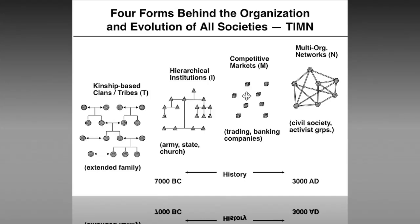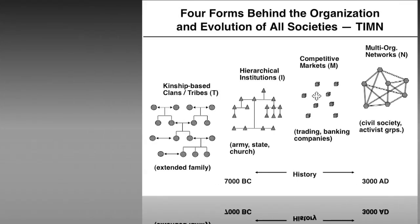If you look at the slide again, you'll see that markets are actually the most difficult of the four forms to depict. As to networks, I'm up against the view that there are really two views. Network science and social network analysis tend to regard everything — all forms of organization — as reducible to networks. I prefer the approach that it's a distinct form of organization, different from tribes, hierarchies, and markets, that's only now finally coming into its own.